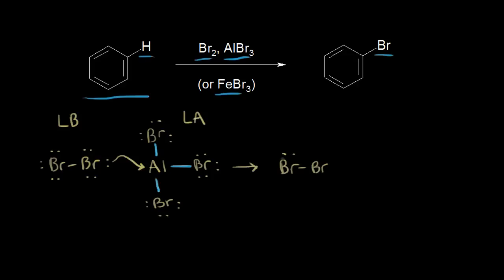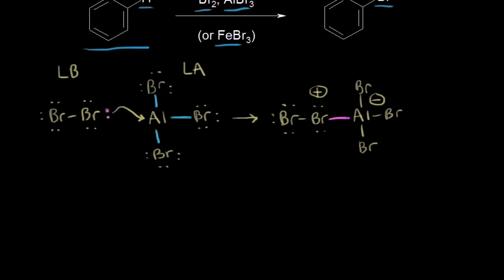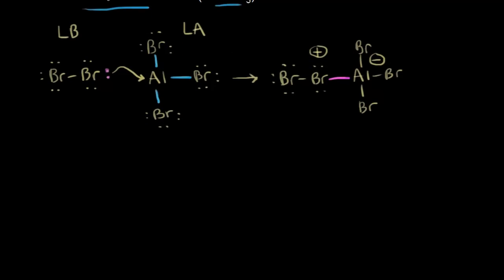Let's draw the result of that Lewis acid-base reaction. Now this bromine is bonded to the aluminum, which is still bonded to the other bromines. Following those electrons: the electrons donated to aluminum (shown in magenta) form the bond between bromine and aluminum, giving the aluminum a −1 formal charge and this bromine a +1 formal charge. This complex is technically what reacts with our benzene ring, but it's hard to see the electrophile in it, so let's show what you can think of as the electrophile, then come back to this complex in the mechanism.